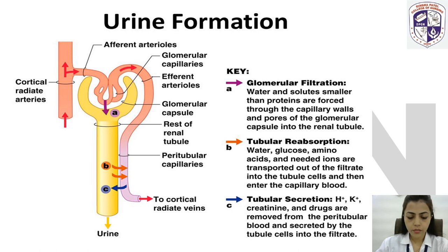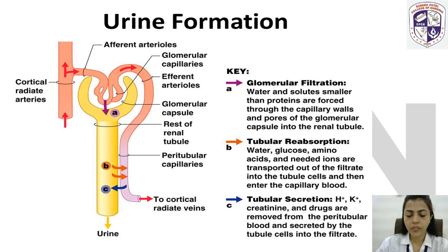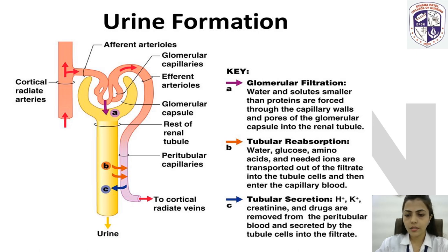In the body, about 120 ml of blood is filtered per minute. The filtration that takes place in one minute in the glomerulus is called the glomerular filtration rate. So this is about urine formation, which takes place in three steps: glomerular filtration, tubular reabsorption, and tubular secretion.